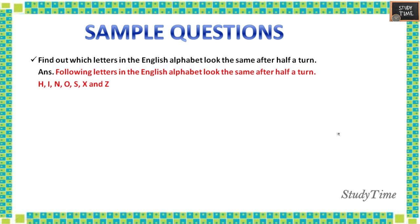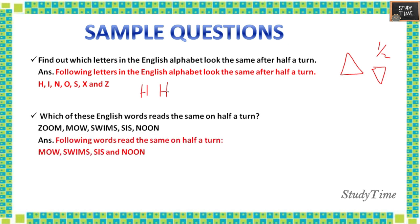Next, find out which letters in the English alphabet look the same after a half turn. When an object is placed one way and you do a half turn, the same object faces the other way. A full turn brings it back to the same point. The letters H, I, N, O, X, and Z all look the same after a half turn. English words like MOB, SWIMS, SIS, and NOON also read the same on a half turn.